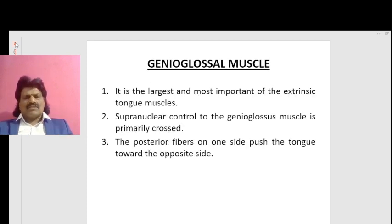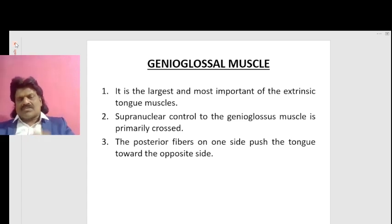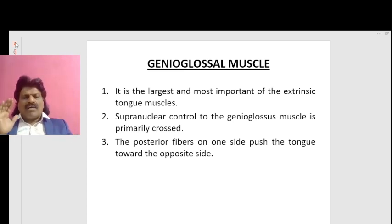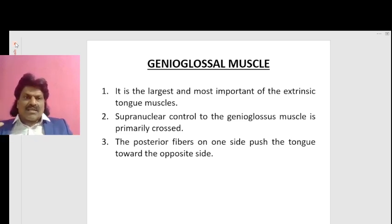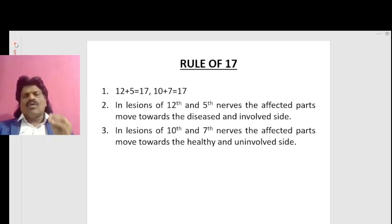Let's talk about the genioglossus muscle, because it is very unique. It is the largest and most important of the extrinsic tongue muscles. The supranuclear control to the genioglossus muscle is primarily crossed — it gets its supply from the contralateral side. The posterior fibers on one side push the tongue towards the opposite side. So the function of the genioglossus is to push the tongue towards the opposite side. This leads into an easy way of remembering movements when nerves are affected — a rule known as the Rule of 17.